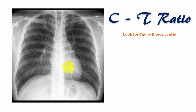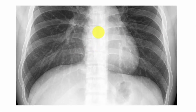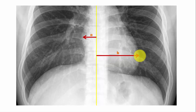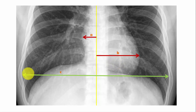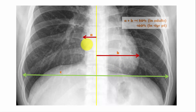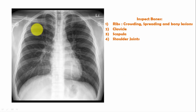Next, comment on the cardiothoracic (CT) ratio. Draw a perpendicular line along the spinous processes of the vertebrae. Draw line A perpendicular to this central line toward the maximum width on the right side of the heart, and line B toward the maximum width on the left side. Compare A plus B with line C, the maximum width of the thoracic cavity. Normally A plus B should be less than 50% in adults and less than 60% in infants — if greater, it may indicate cardiomegaly.